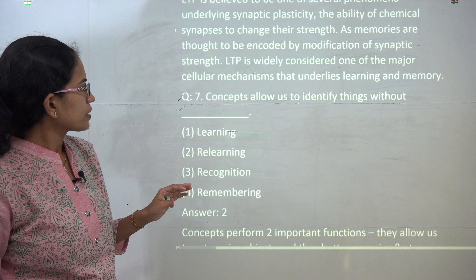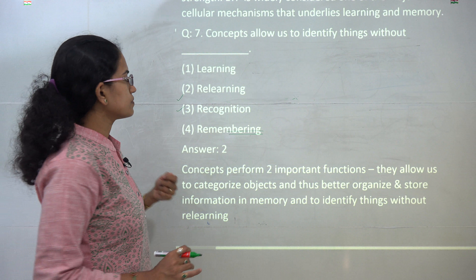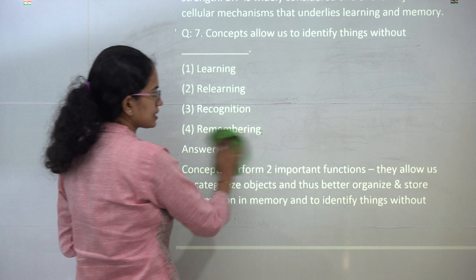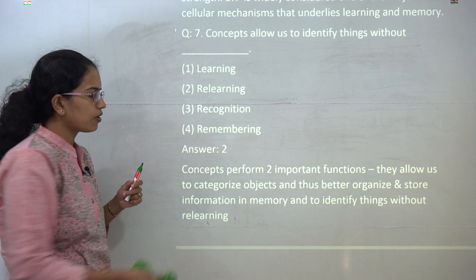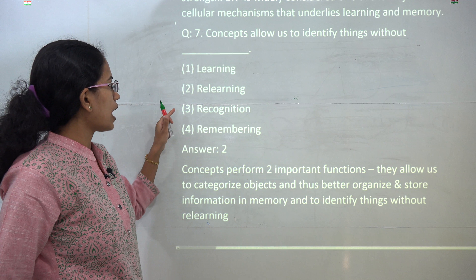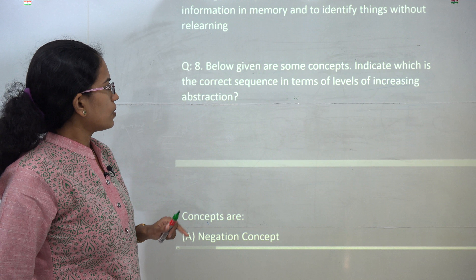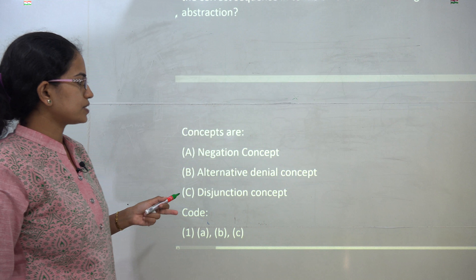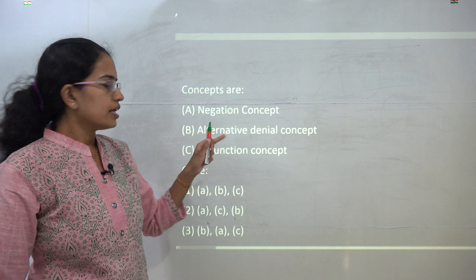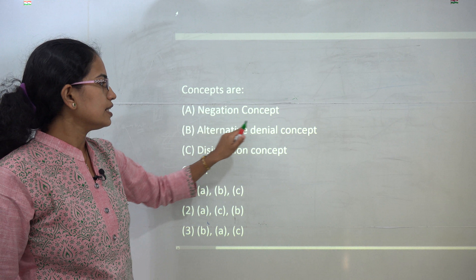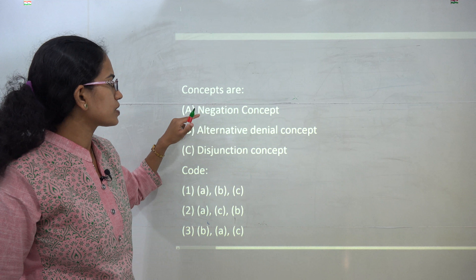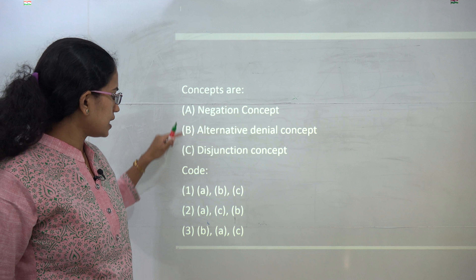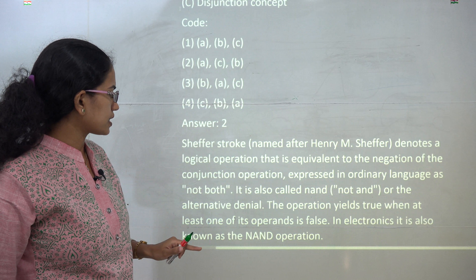The next question: concepts allow us to identify things without relearning. There are two things under concept building — first is categorization and better organization, and the second is identifying without relearning. So option 2 is correct. The next question asks for the correct sequence in terms of increasing abstraction: negation, then disjunction (the concept of 'or'), and alternative denial (NAND). So A, C, and B would be the correct options — option 2 is the correct answer.